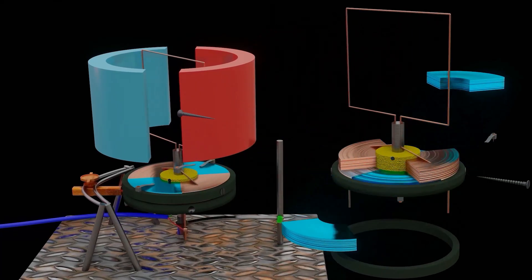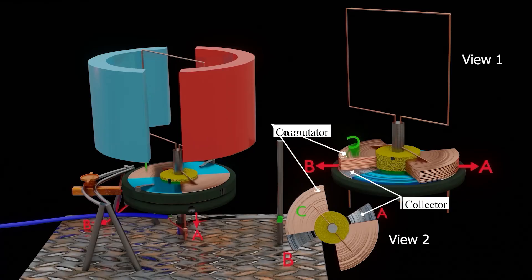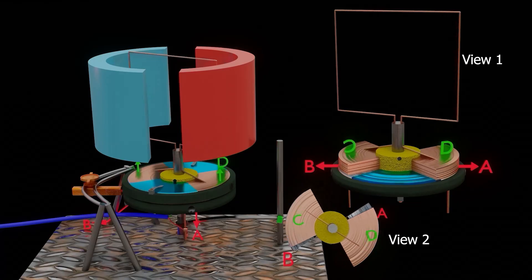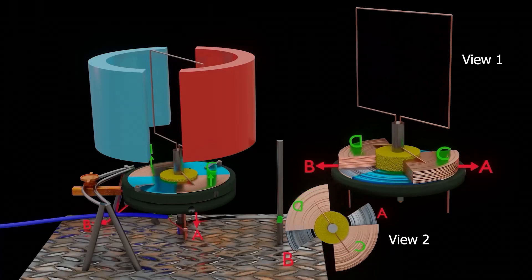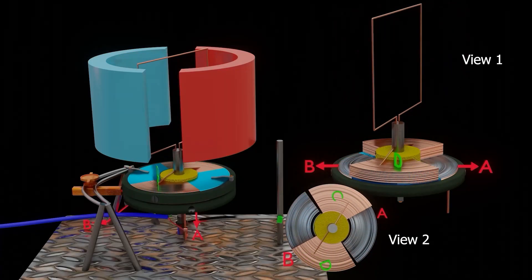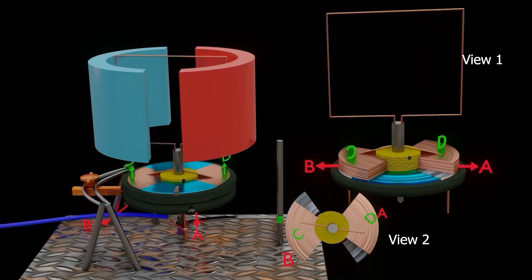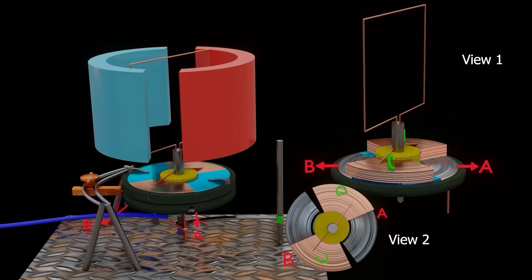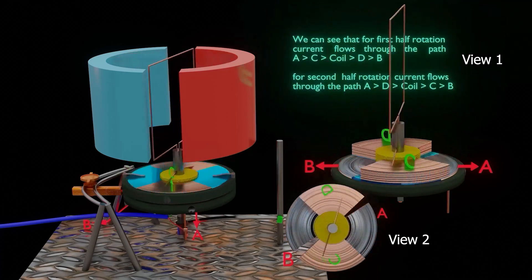For better understanding, we name the collector segments as AB and commutator segments as CD. We can see that for the first half rotation, segments AC and segments BD are in contact. For the second half rotation, segments AD and segments BC are in contact. Thus, we can see how this commutator changes the direction of current in the coil.